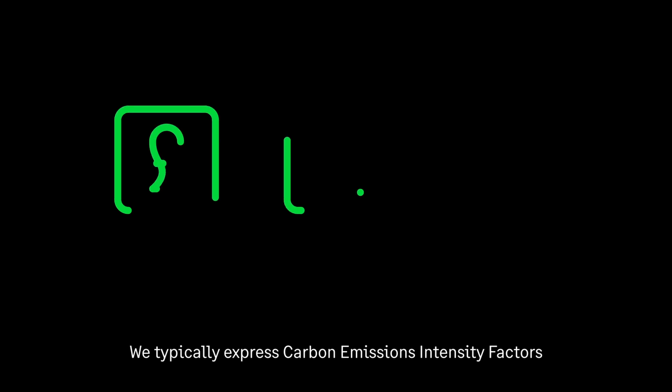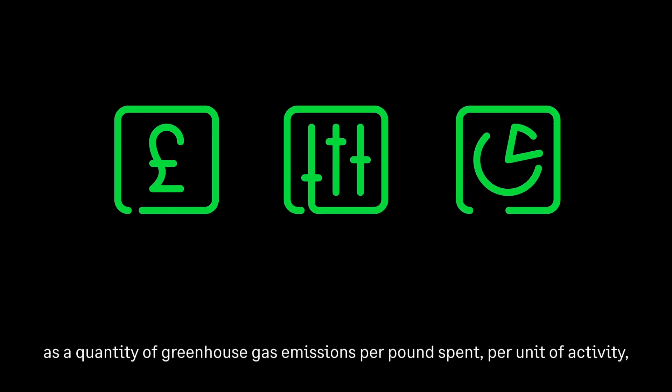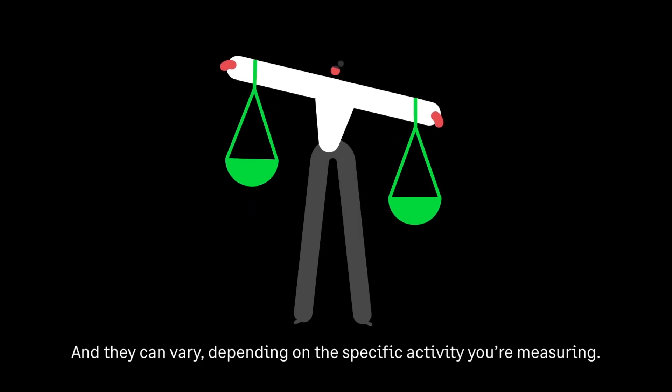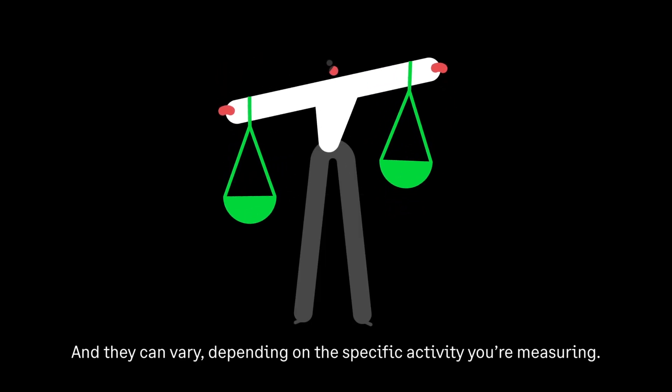We typically express carbon emissions intensity factors as a quantity of greenhouse gas emissions per pound spent, per unit of activity, or per resource consumed. They can vary depending on the specific activity you're measuring.